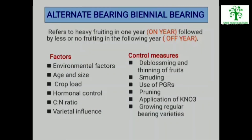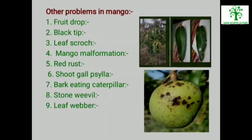Alternate Bearing or Biennial Bearing refers to heavy fruiting in one year (on year) followed by less or no fruiting in the following year (off year). Factors for alternate bearing are environmental factors, age and size, crop load, hormonal control, C:N ratio, and varietal influence. Control measures for alternate bearing are deblooming and thinning of fruits, smudging, use of PGRs, pruning, application of KNO₃, and growing of regular bearing varieties. Other problems in mango are fruit drop, black tip, leaf scorch, mango malformation, red rust, shoot gall psylla, bark eating caterpillar, stone weevil, and leaf weaver.